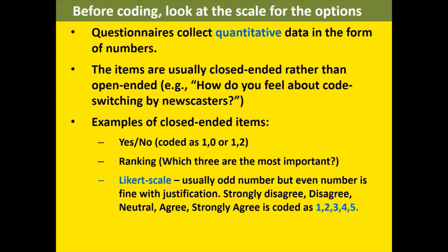The public is very familiar with the Likert scale — strongly disagree, disagree, neutral, agree, strongly agree — and you are encouraged to use this. You can choose only four options, removing the neutral midpoint so there is no sitting on the fence, which was my choice for my PhD. Or you can choose the odd number of five, seven, or more options, because there are certain things people genuinely have no stand on. You must have your reason for choosing four, five, six, or seven options.